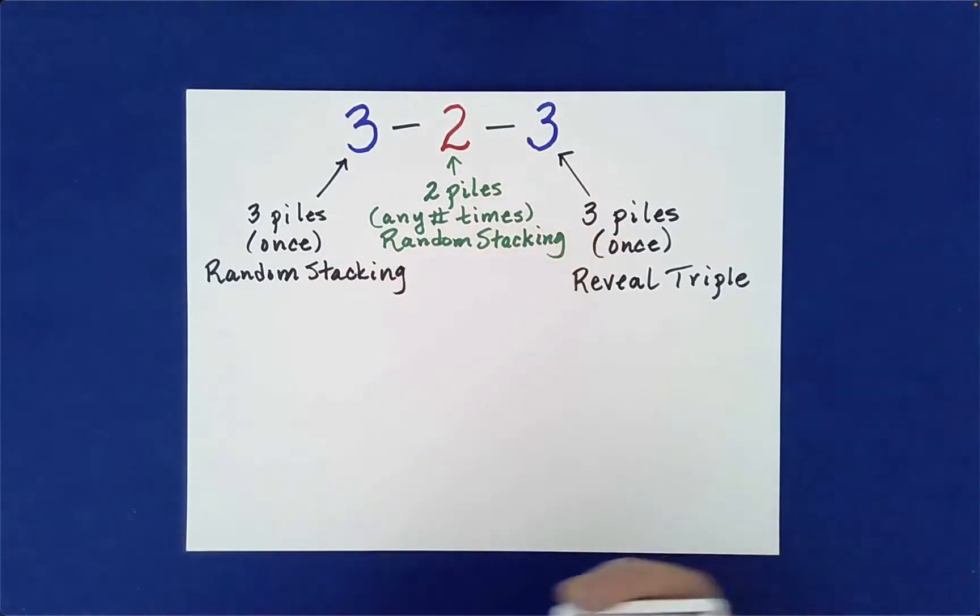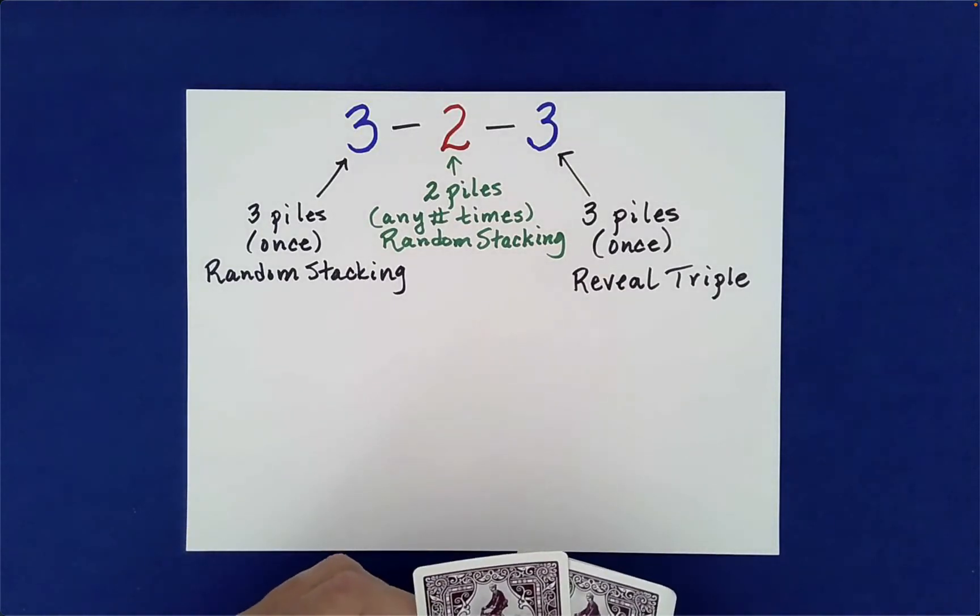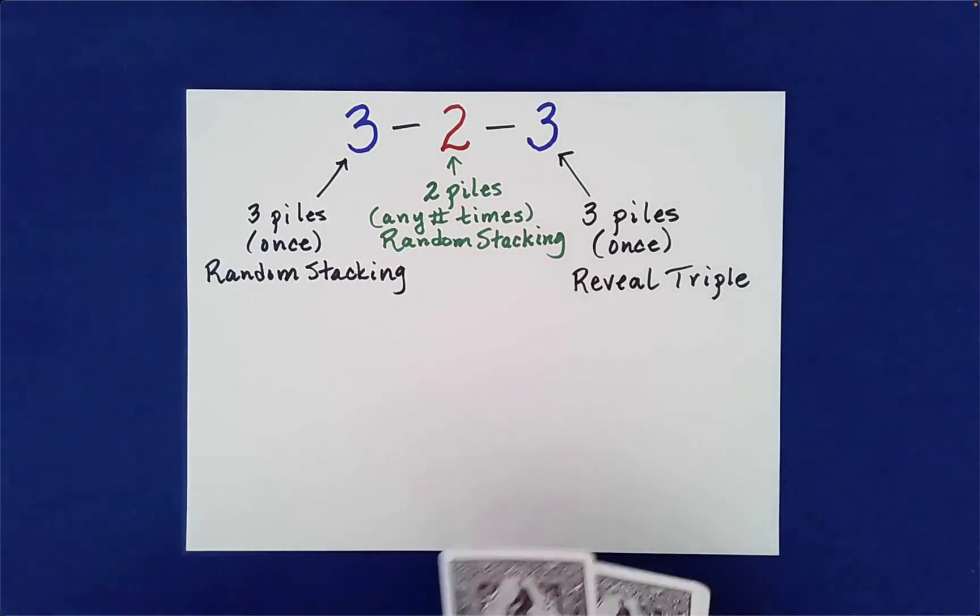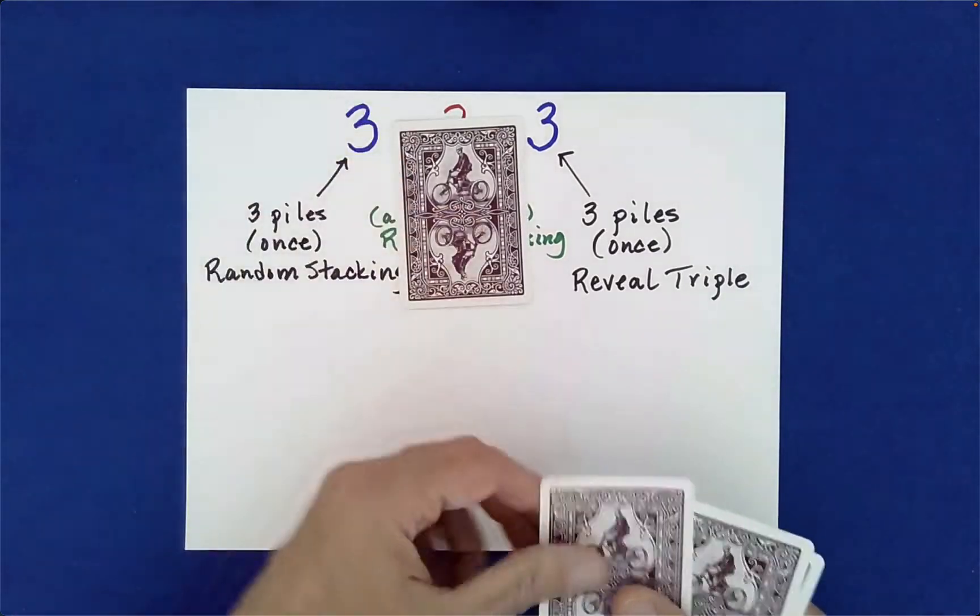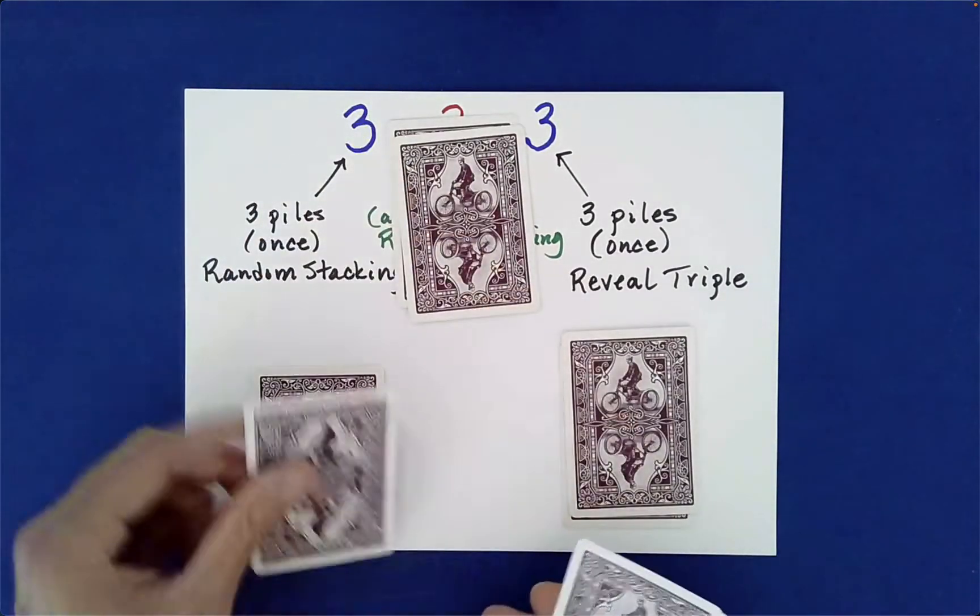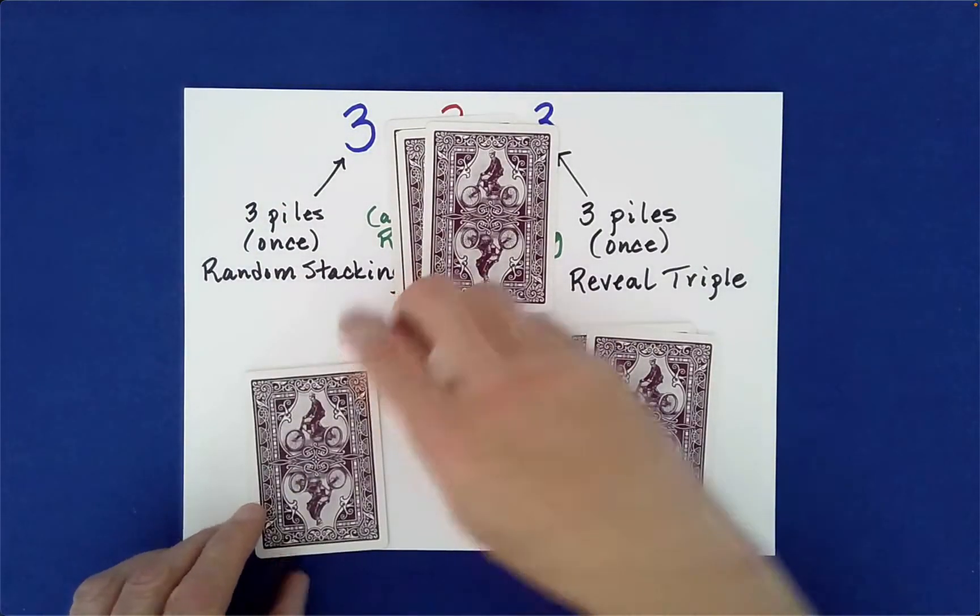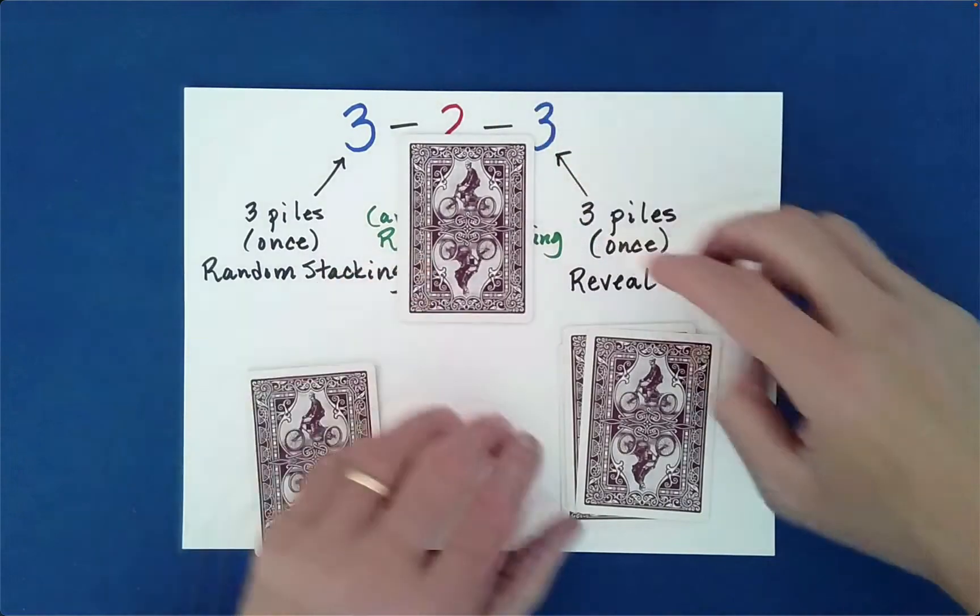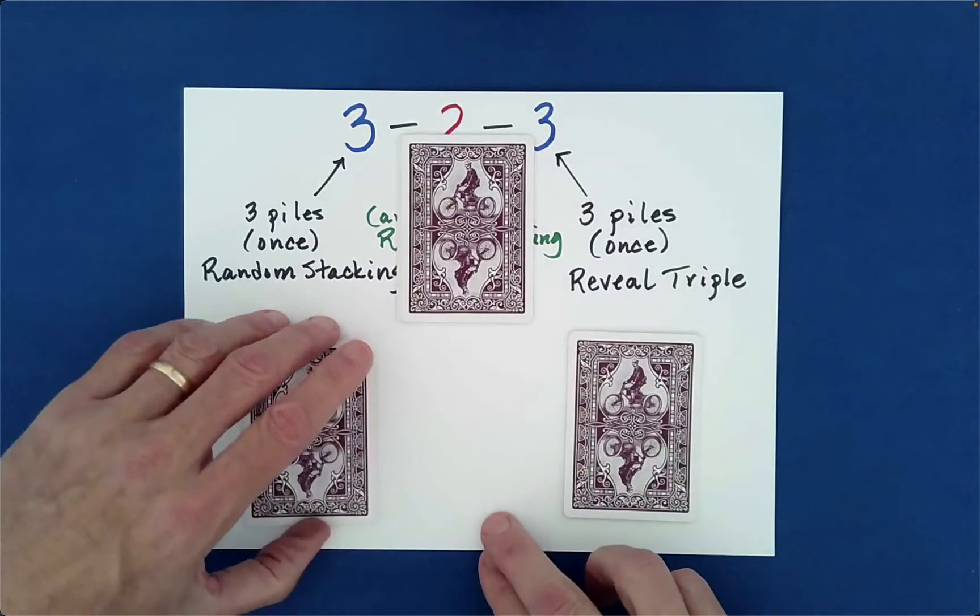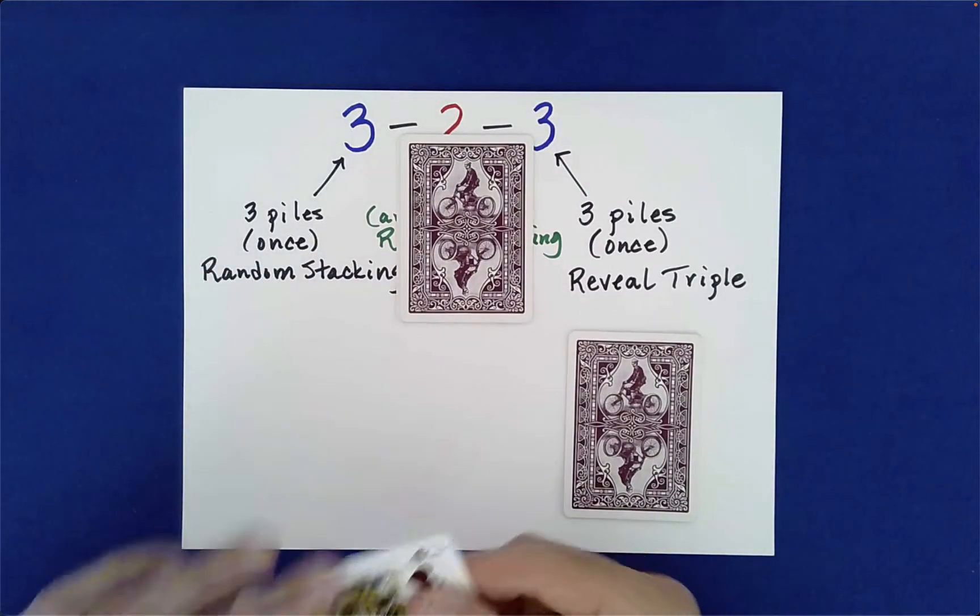What we do now is we just deal the cards into three piles and then we can reveal our special triple. So you can do like one, two, three, one, two, three, one, two, three. And what will always, always, always happen is the original three cards of the starting deck will be together in the same little pile.